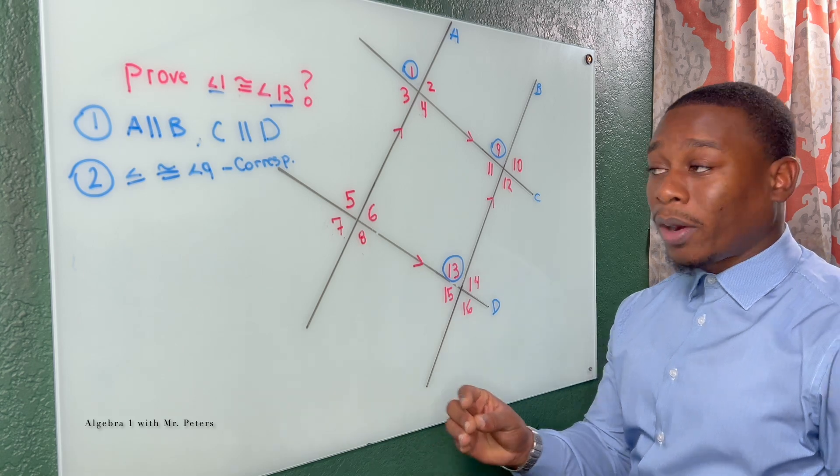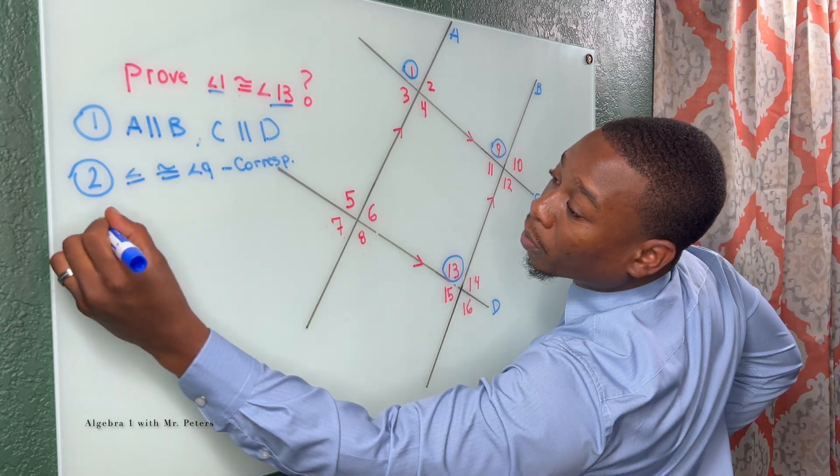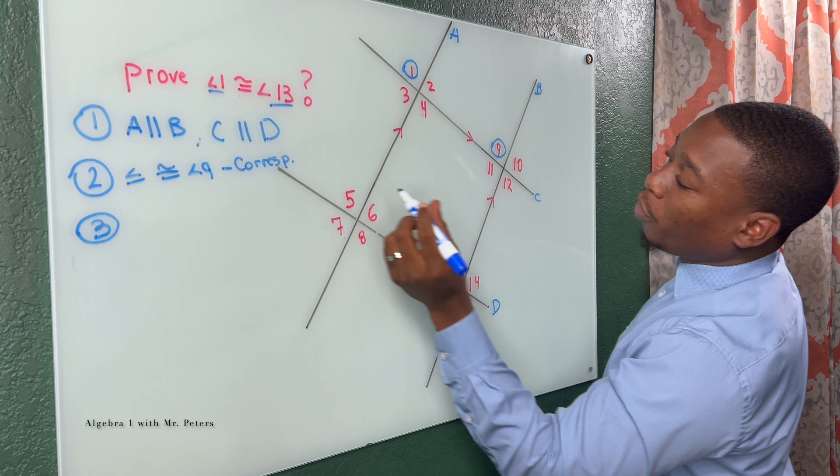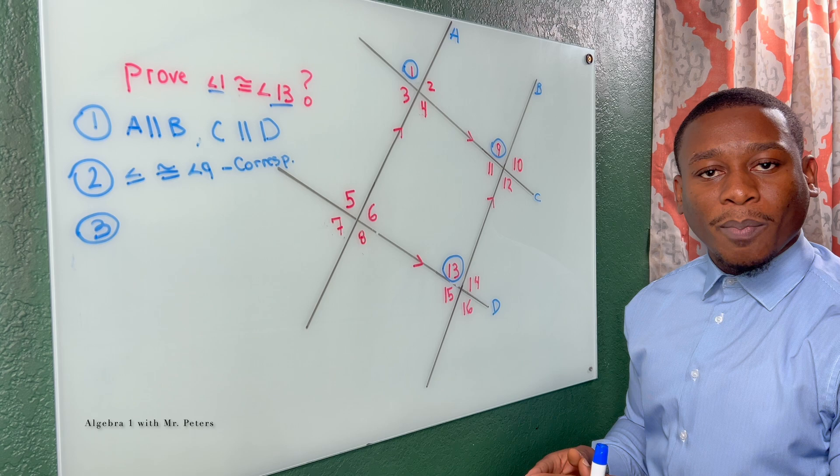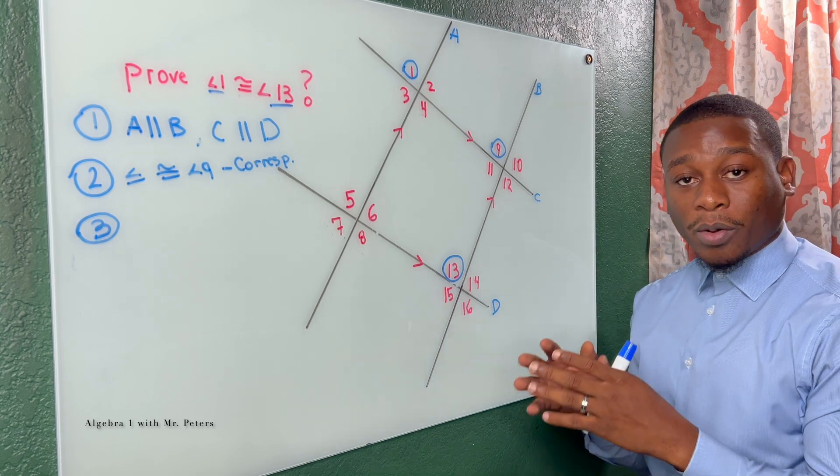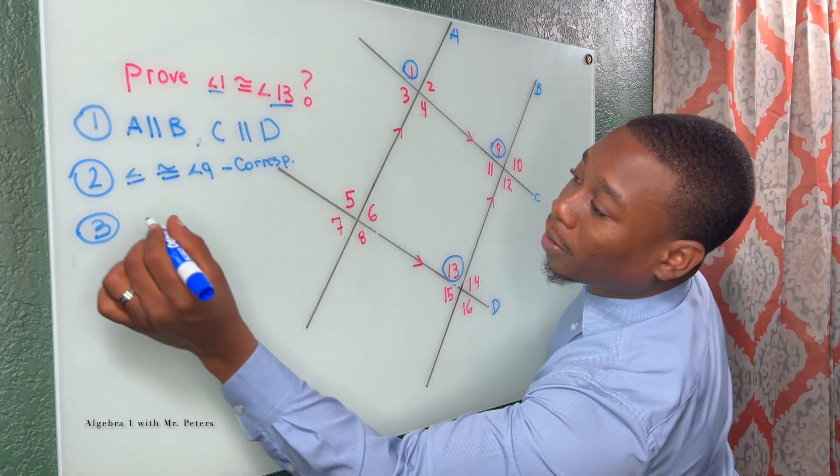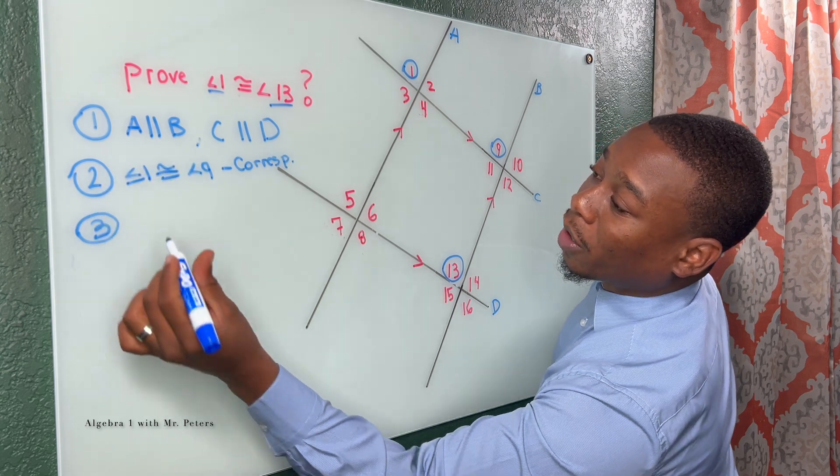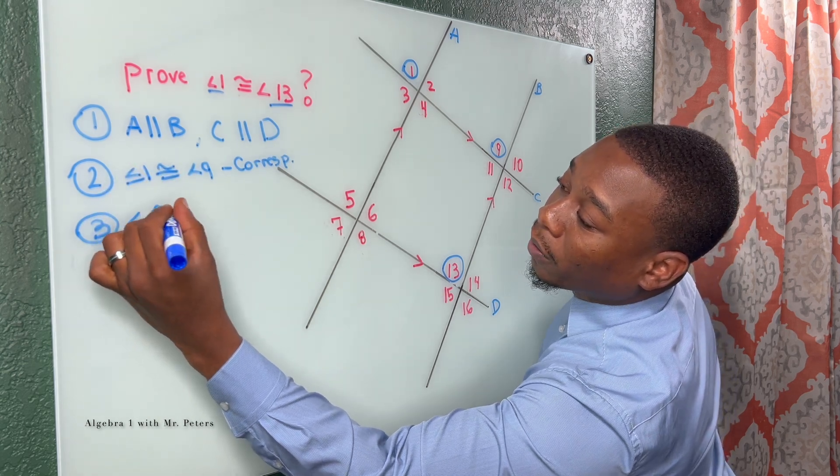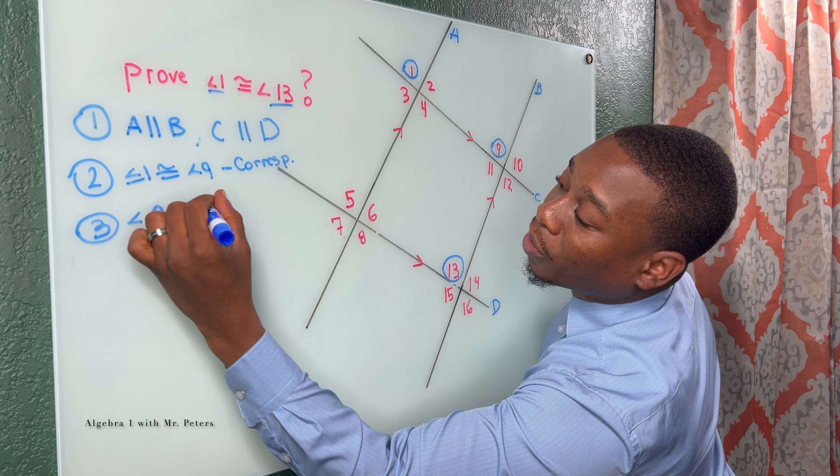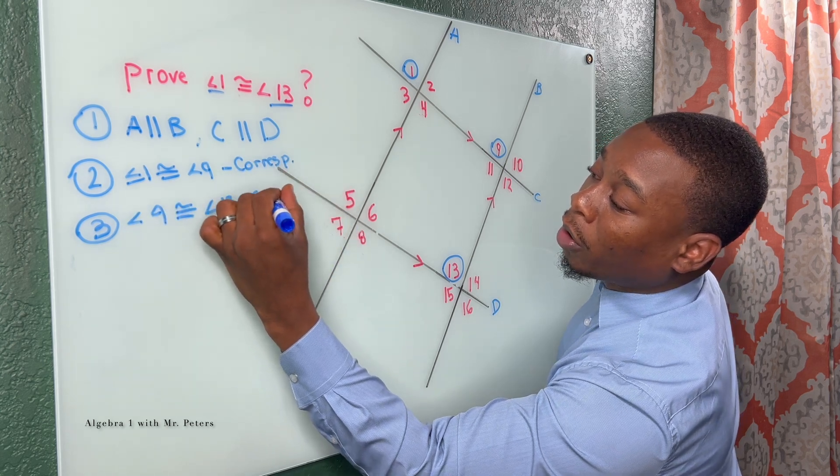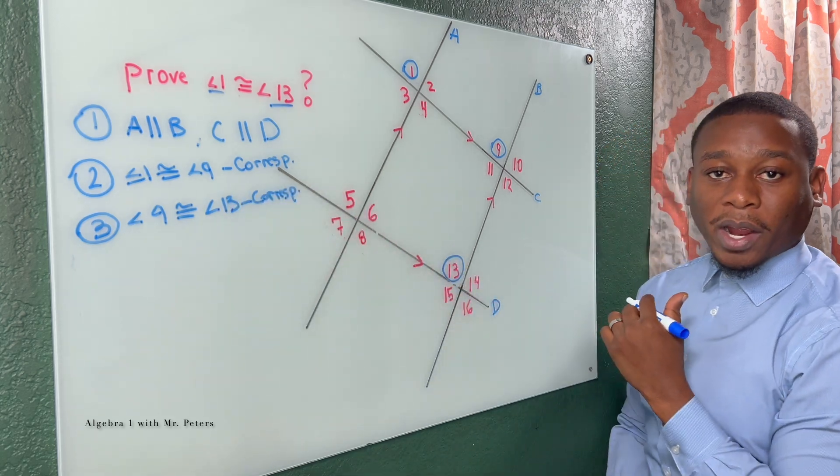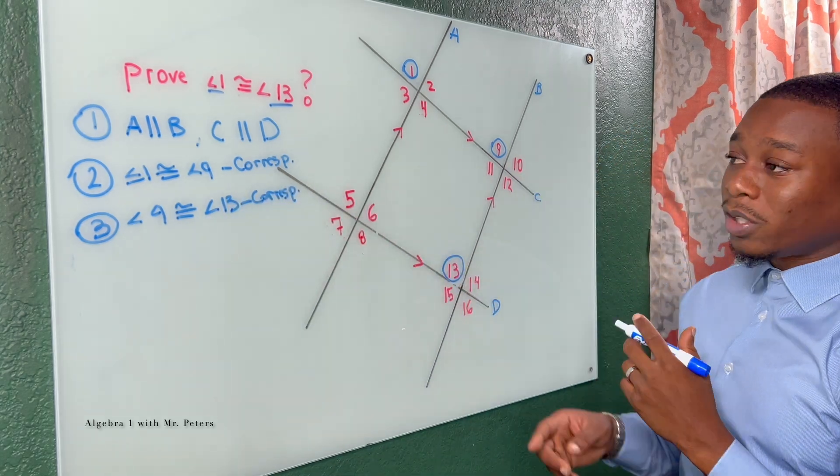Then from there, what I would now do is I would focus on angle 9 and angle 13. What would I say about angle 9 and what would I say about angle 13? I would say that, oops, I forgot my one here, guys. I'm sorry. I would say that angle 9 is congruent to angle 13 for the same thing. They are corresponding angles. So we know these two are the same.